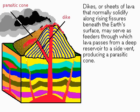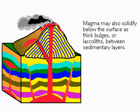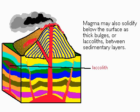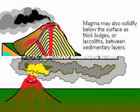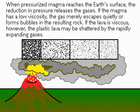Not all lava may vent. Magma may also solidify below the surface as thick bulges called laccoliths, which form between sedimentary layers. When pressurized magma reaches the earth's surface, the gases in it are released. If the magma has a low viscosity or thickness, the gas can escape easily. If the lava is viscous, however, the thick lava may be shattered by the pressure of the gases.